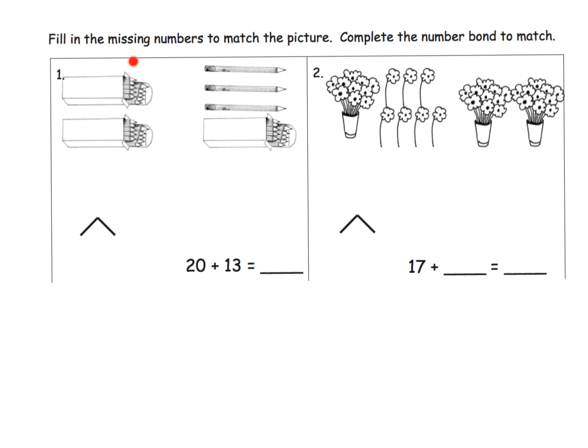So it says fill in the missing numbers to match the picture. We can see that we've got two tens, so that's 20. We have a 10 and three ones, so there's 13. We can count and see that we have three tens and three ones, so the answer is 33.